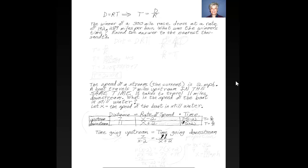The winner of a 300-mile race drove at a rate of 142.289 miles per hour. What was the winner's time, and round the answer to the nearest thousandth. Now, we're looking for the time. This is a rate times distance problem, or if you prefer, a distance-rate-time problem, which is one of the reasons we call it a dirt problem.